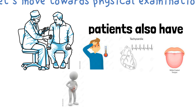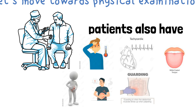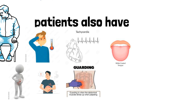The patient also has rebound tenderness and guarding. Rovsing's sign is also present, which is pain in the right iliac fossa on pressing the left iliac fossa, because all the peritoneal fluid shifts towards the right, producing pain in the right iliac fossa.